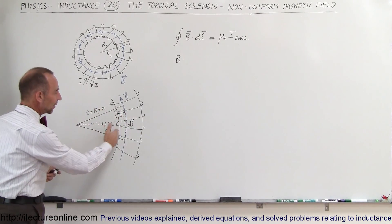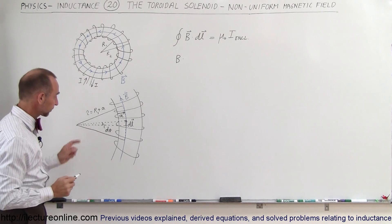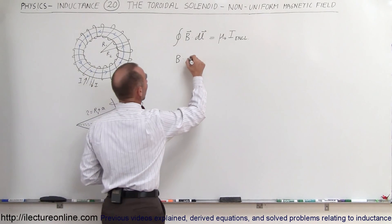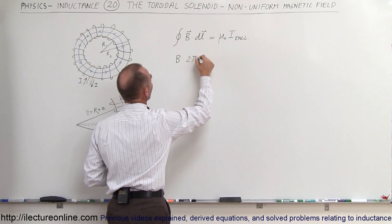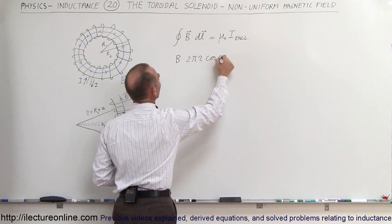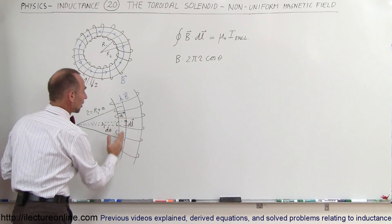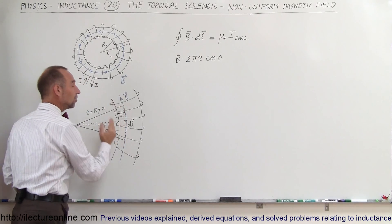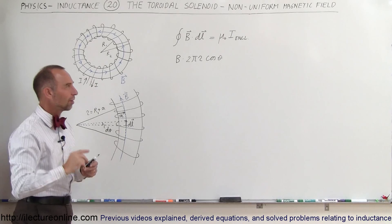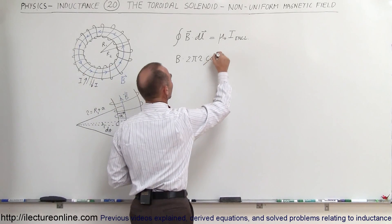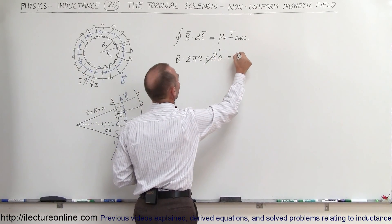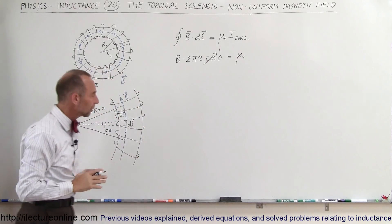So that's going to be 2 pi times little r times the cosine of the angle between the direction of the path and the direction of the magnetic field. But you can see that they're both in the same direction so therefore that the cosine of 0 degrees and the cosine of 0 degrees is equal to 1 so it's equal to mu sub naut times I enclosed.